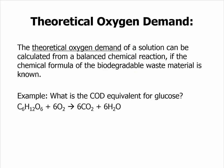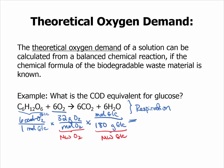The theoretical oxygen demand can be calculated from a balanced biochemical reaction. In the below example, we have glucose being oxidized biochemically to CO2 and water. This reaction is known in biology as respiration. The theoretical oxygen demand is simply calculated by reading the chemical reaction. There are six moles of oxygen consumed per mole of glucose. You multiply by the molecular weights, the moles cancel out, and you're left with grams of oxygen per gram of glucose. This is equal to 1.067 grams of oxygen per gram of glucose, referred to as the COD equivalent.